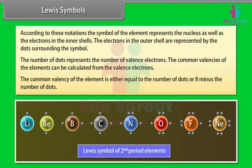The common valency of the element is either equal to the number of dots or 8 minus the number of dots. For example, the common valencies of lithium, beryllium, boron and carbon are 1, 2, 3, and 4 respectively. While those of nitrogen, oxygen, fluorine and neon are 8 minus the number of dots — that is, 3, 2, 1 and 0 respectively.